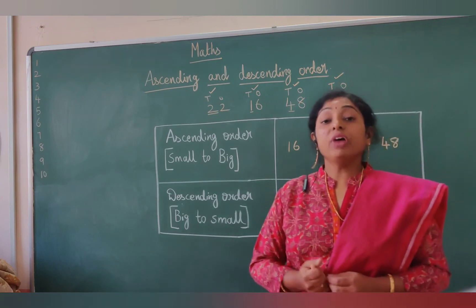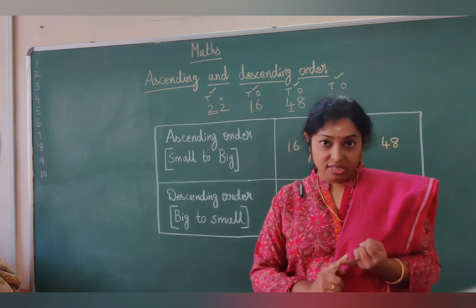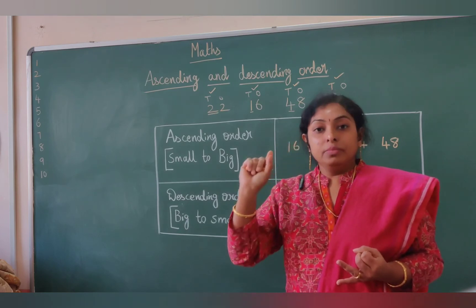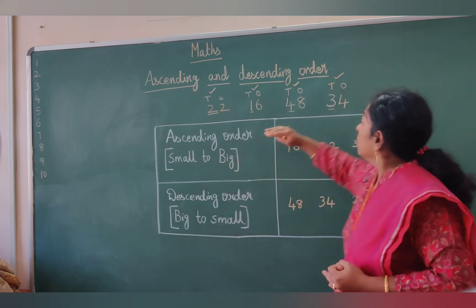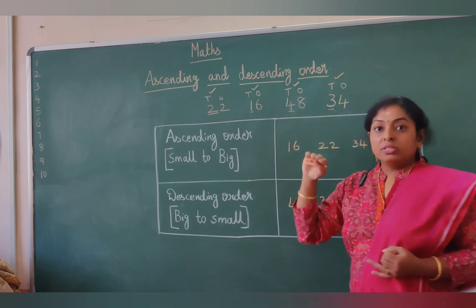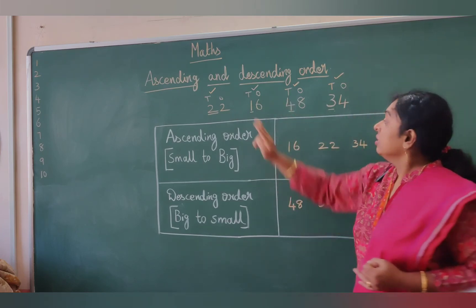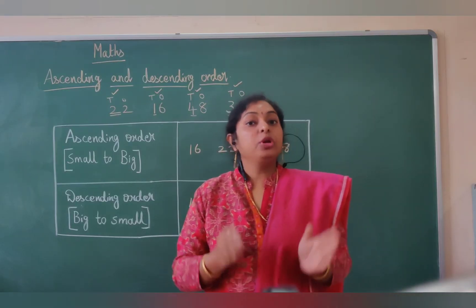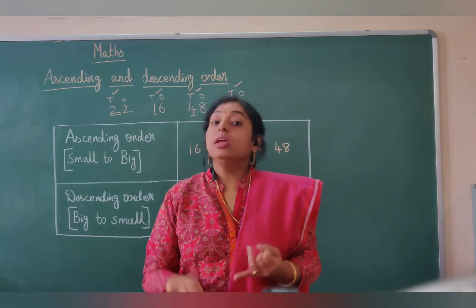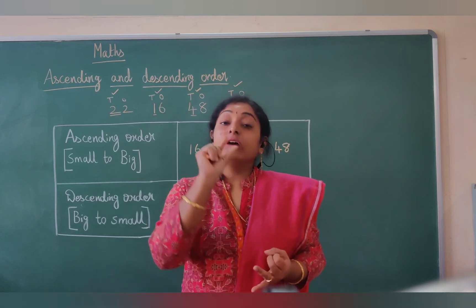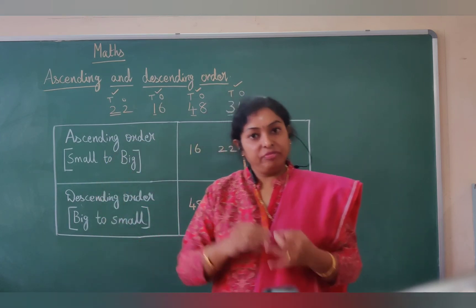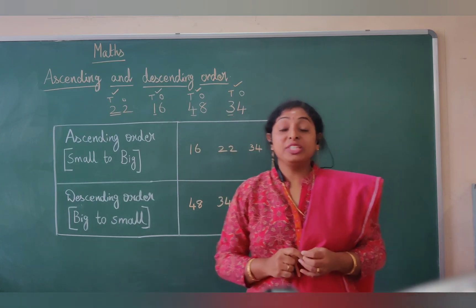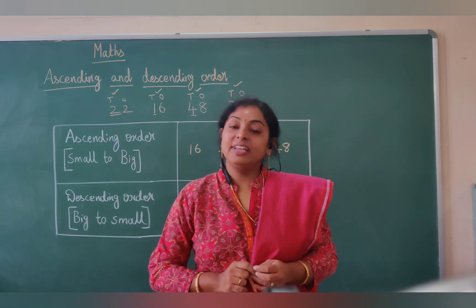I hope you understood about the concept of ascending and descending order for single-digit numbers, double-digit numbers with the same digit in the tens place, and arrangement of two-digit numbers which have different digits in the tens place. With this we covered arrangement of single-digit numbers, numbers with a common tens place, and numbers with different tens digits. We will see you in the next video. Till then, take care. Bye bye.